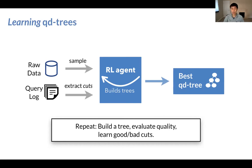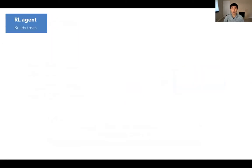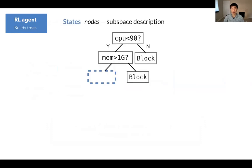So now let's zoom in into the RL agent. The first step is to define what we mean by the RL problem and what the state space and action space are. In our case, the states are just the nodes, such as the blue dash rectangle here. And we are going to represent each node using a compact description of the subspace it corresponds to. For instance, in this case, CPU can range from 0 to 90 and so forth.